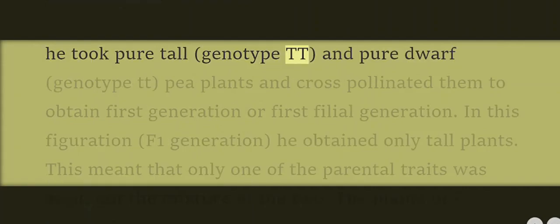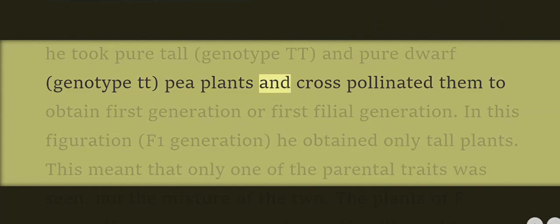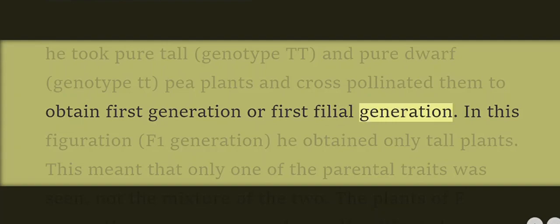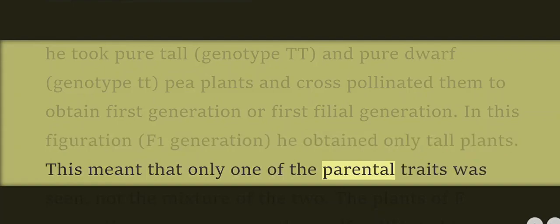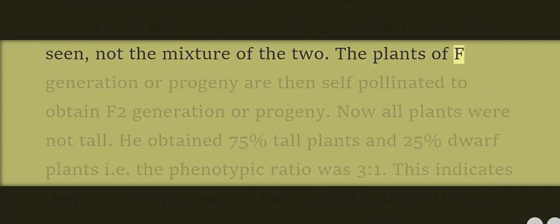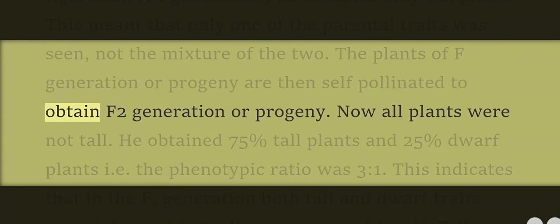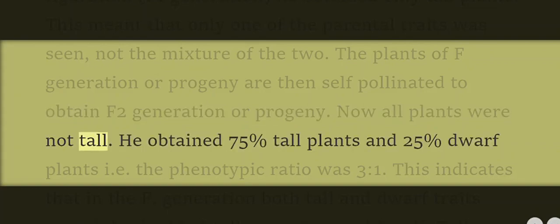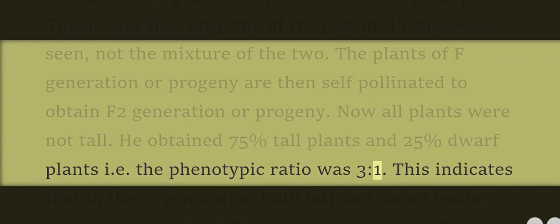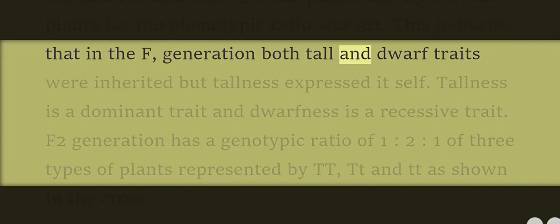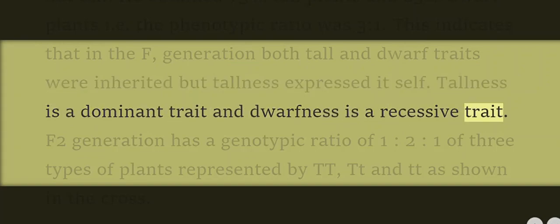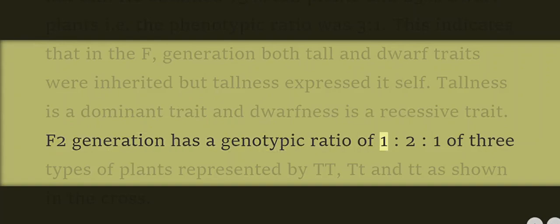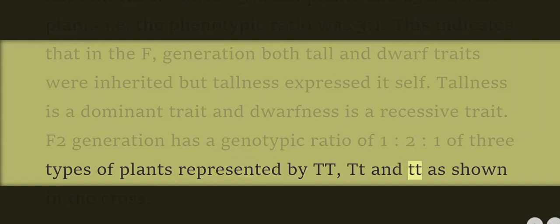He took pure tall (genotype TT) and pure dwarf (genotype tt) pea plants and cross-pollinated them to obtain the first filial generation (F1). In F1 generation, he obtained only tall plants, meaning only one parental trait was seen, not a mixture of the two. The plants of F1 generation were then self-pollinated to obtain F2 generation. Now not all plants were tall — he obtained 75% tall plants and 25% dwarf plants, giving a phenotypic ratio of 3:1. This indicates that in F1 both tall and dwarf traits were inherited but tallness expressed itself. F2 generation has a genotypic ratio of 1:2:1, representing three types of plants: TT, Tt, and tt.